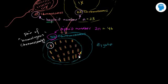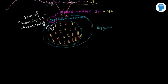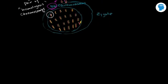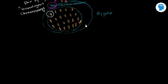I got a Y sex chromosome from my father and an X from my mother, so I'm going to be a male. And so what then happens? Well, through mitosis, this zygote is going to keep replicating.